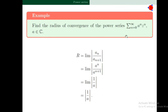Find the radius of convergence of sigma a^n · z^n, where a is an element of C. The radius of convergence is given by R = lim |a_n / a_{n+1}| = 1 / |a|.